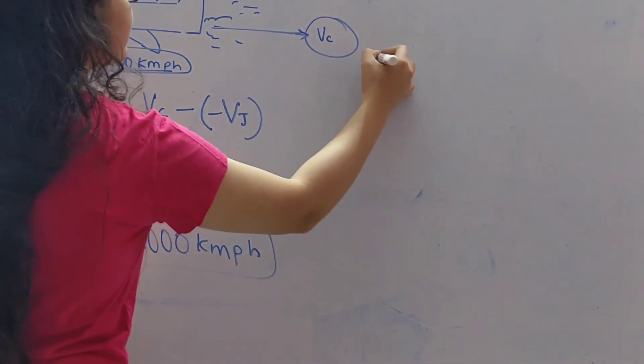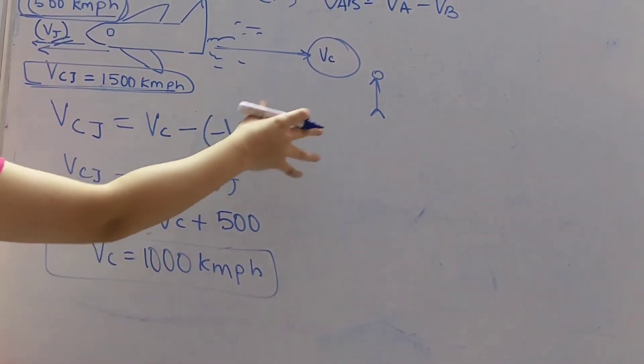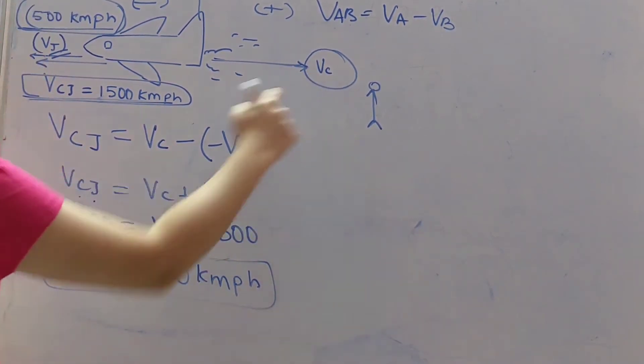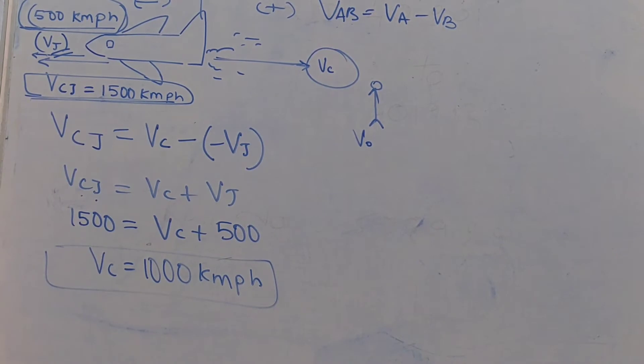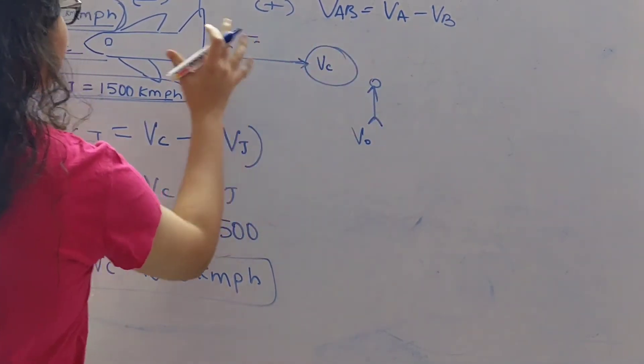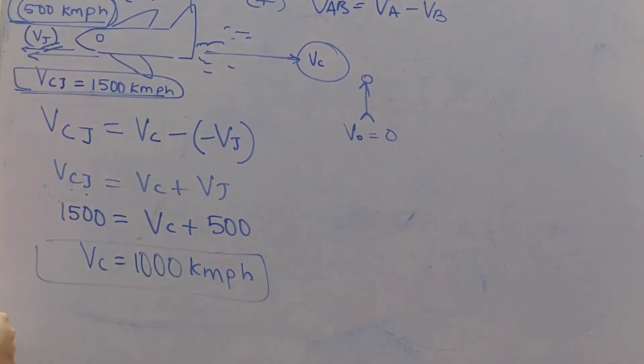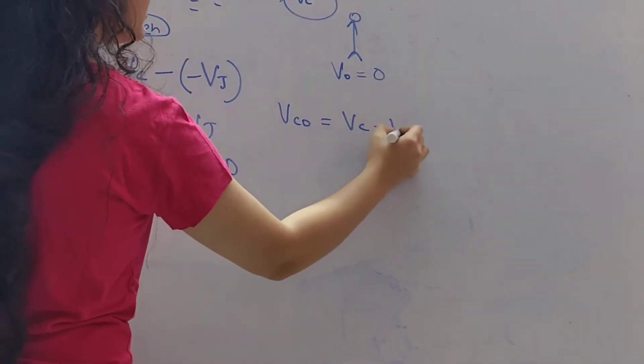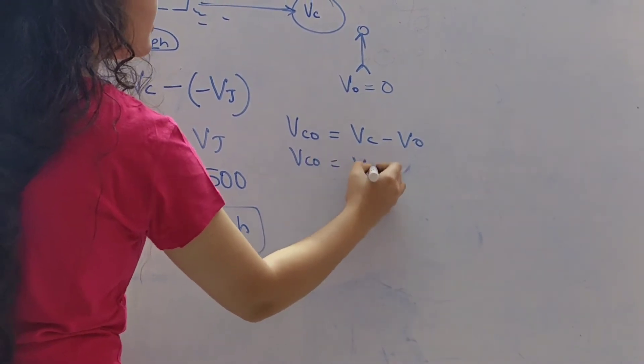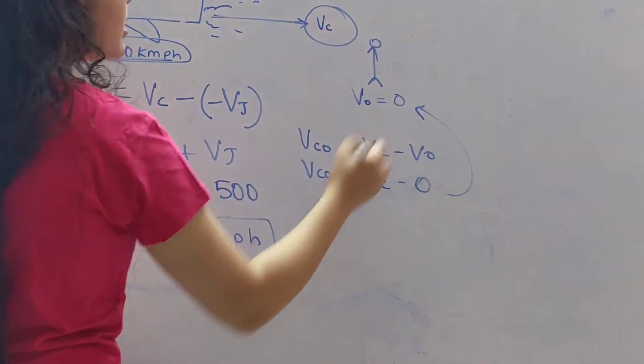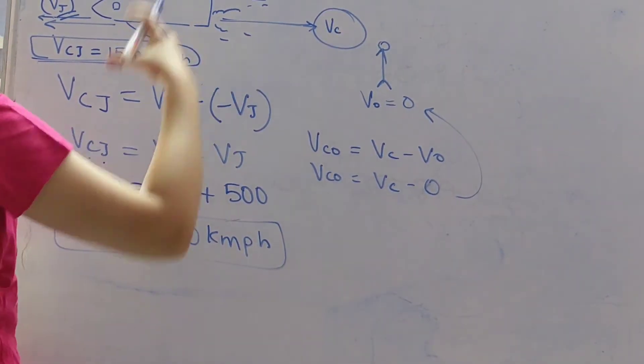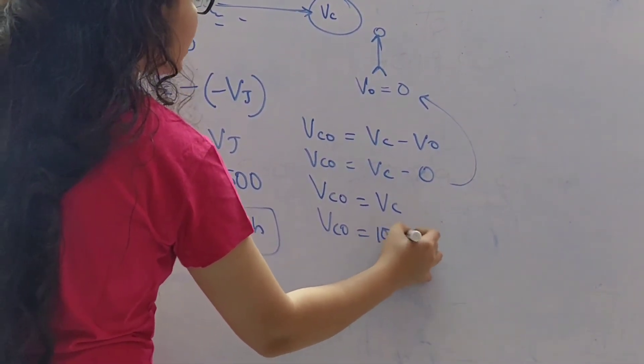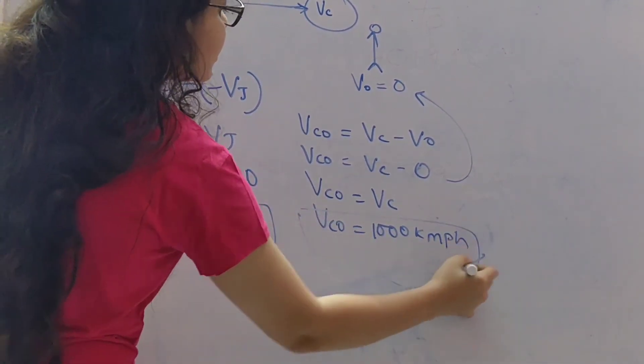Now consider an observer here who is observing this whole case and we have been asked to find out the relative velocity of this combustion with respect to the observer. So VO is the velocity of observer. Whenever someone is observing something we assume their velocity to be 0. So they are at rest and then they are observed. So VCO equal to VC minus VO but what is VO? It is 0, because the person is at rest and then he or she is observing. So VCO equal to VC, so VCO is nothing but 1000 km per hour.